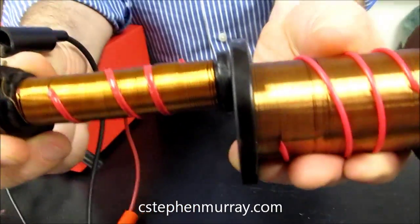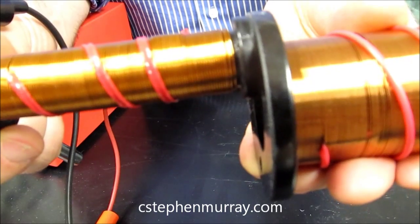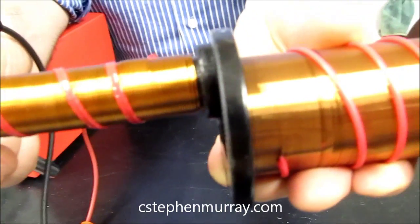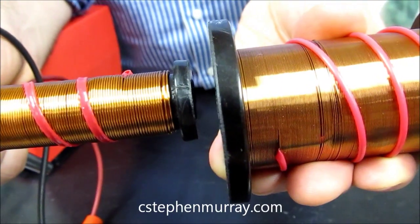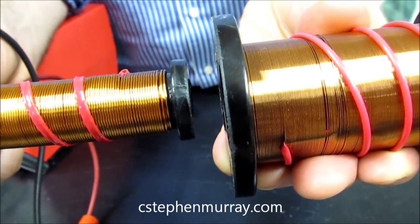we have large wires, but few of them. So that would be low voltage, high current. Here we have a lot of coils, but they're very small. That means low current, high voltage.